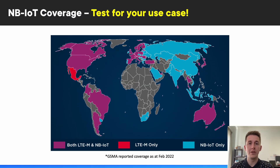Looking at the global coverage map for both LTE-M and NB-IoT, we can see a lot of regions that are solely invested in NB-IoT, and others that previously had LTE-M that have now complemented that with NB-IoT as well.